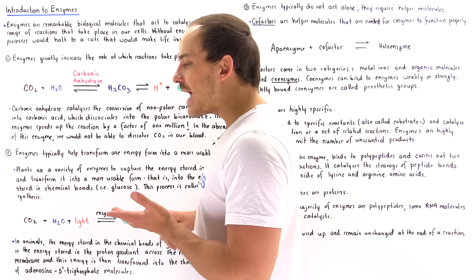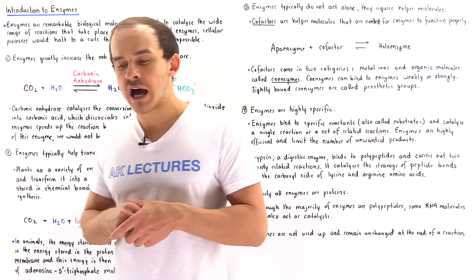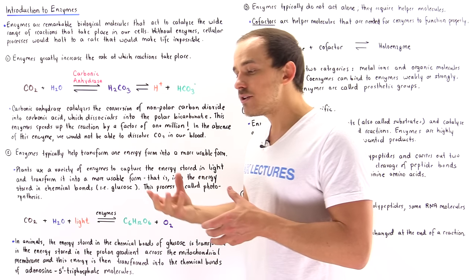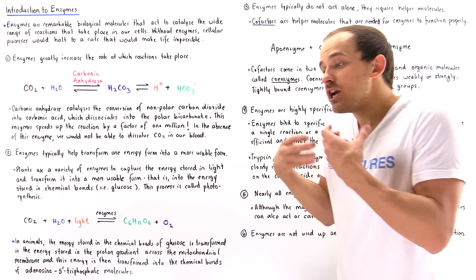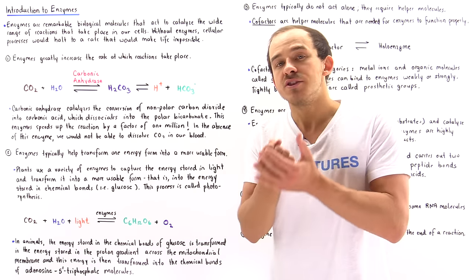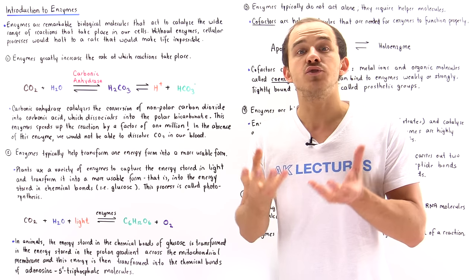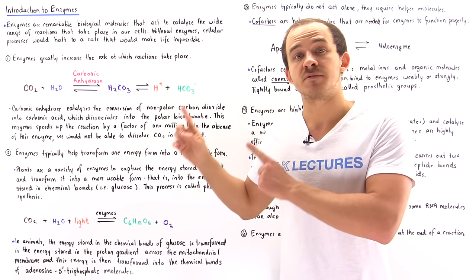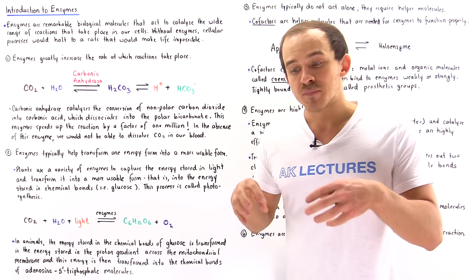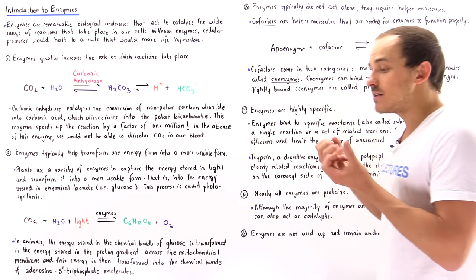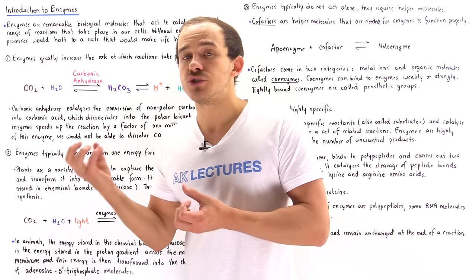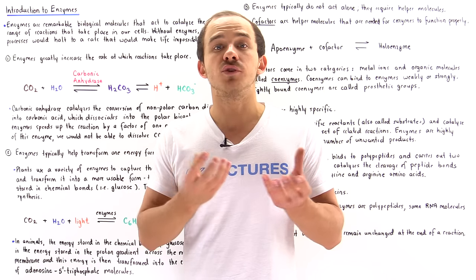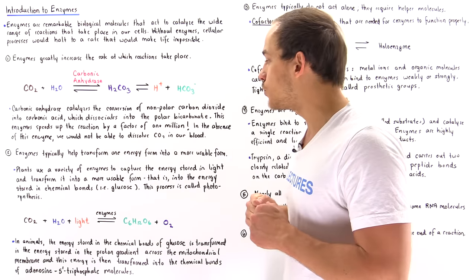So inside plants we have a variety of different types of enzymes that essentially transform, they harvest or capture the energy that is stored in electromagnetic radiation that comes from the sun, namely light. So they transform the energy that is stored in light into energy stored in the chemical bonds of glucose and sugar molecules.